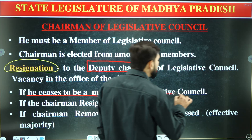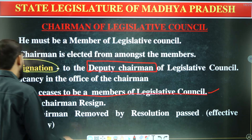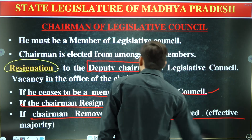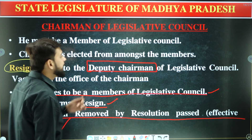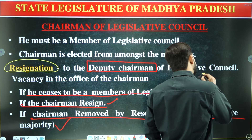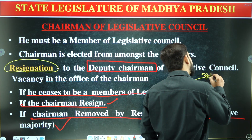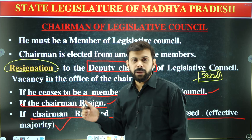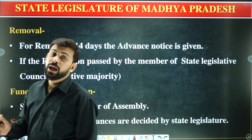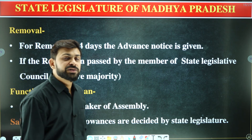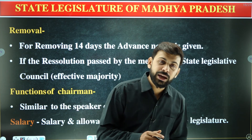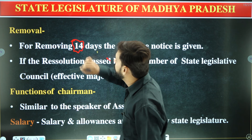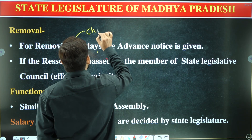The Deputy Chairman acts as Chairman in three cases: first, if the Chairman ceases to be a member of the legislative council; second, if the Chairman resigns; third, if the Chairman is removed by a resolution passed by an effective majority. The removal procedure requires a 14-day prior notice, just like in the legislative assembly.